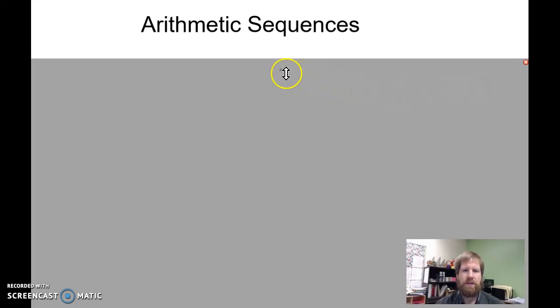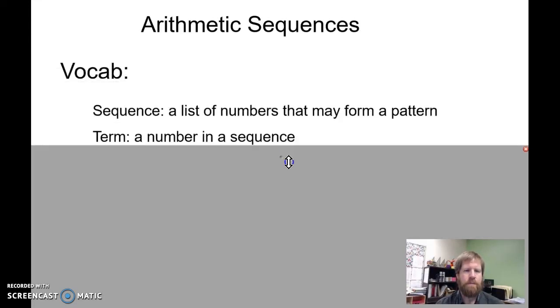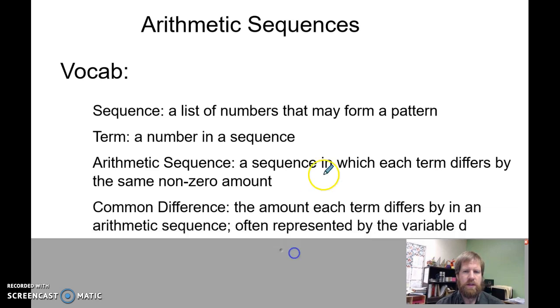Arithmetic sequences. A sequence is just a list of numbers that may or may not form a pattern. For example, I could have two, four, six.